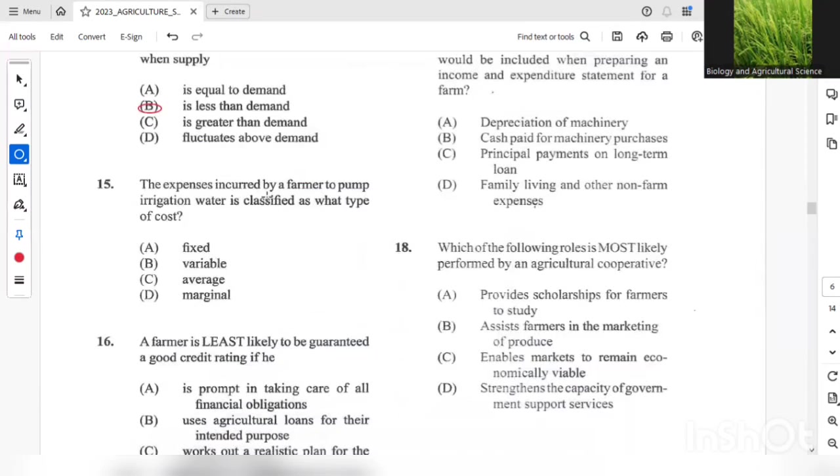Question 15. The expenses incurred by a farmer to pump irrigation water is classified as what type of costs? This should be variable costs.